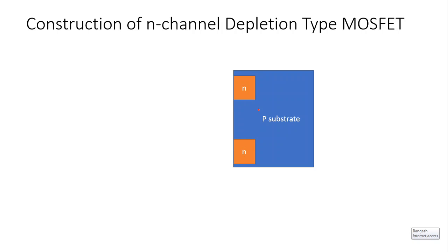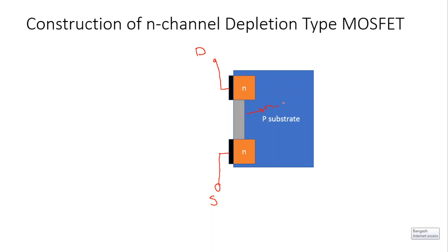We have two n-doped regions with metallic contacts. The drain and source terminals are connected to these metallic contacts. We have a drain terminal connected to one n-doped region through a metallic contact, and a source terminal connected to the other n-doped region through a metallic contact. We have a channel between the two n-doped regions — that is, we have an n-channel between drain and source.